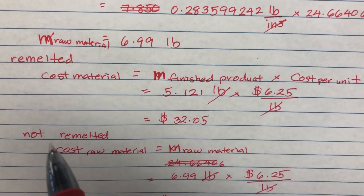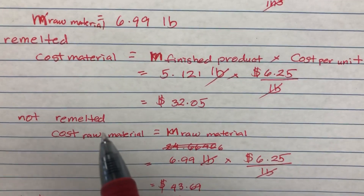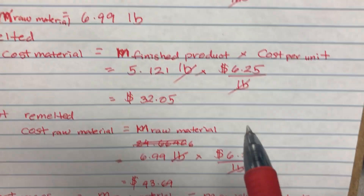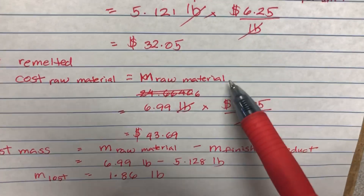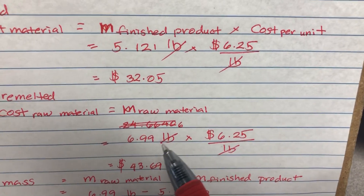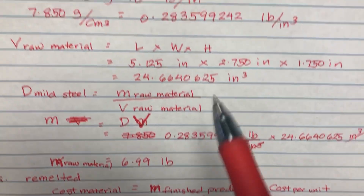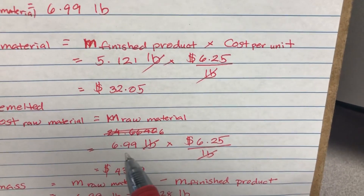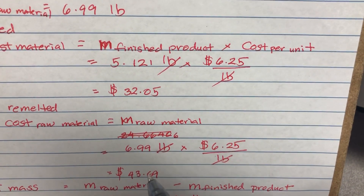What if we do not remelt the cuttings and just throw them away? In that case, you use the mass of the raw material multiplied by the cost per unit: 6.99 times $6.25, giving an answer of $43.69.